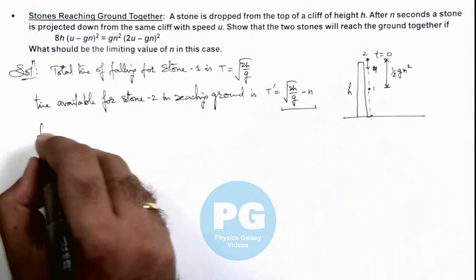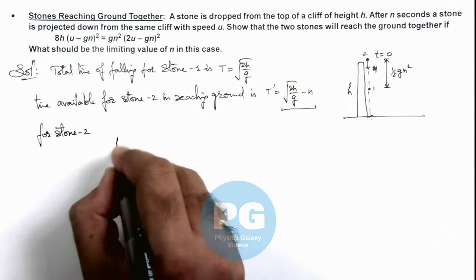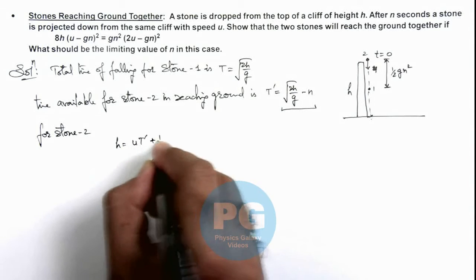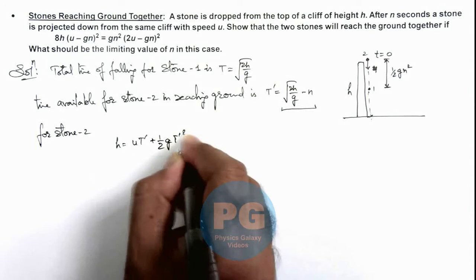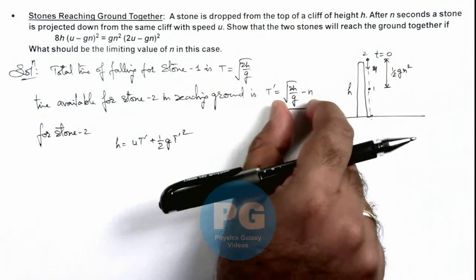So we can write for stone 2: h is equal to u t dash plus half g t dash square, because this h distance stone 2 has to travel in this much of time.